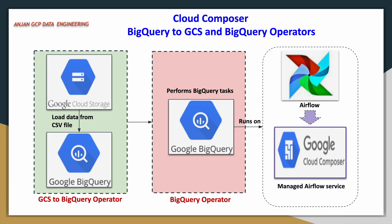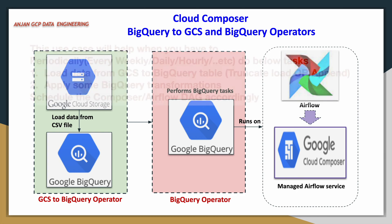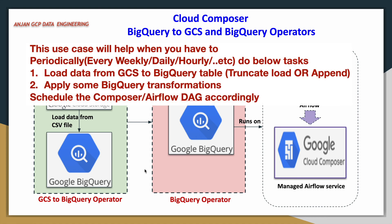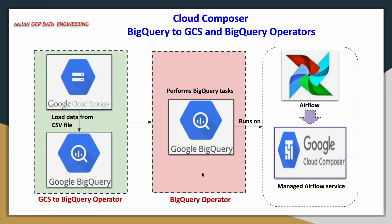This is a simple pipeline and these two operators are very important. Most of the time when you are working on a data warehouse with BigQuery, if you have to load data from Google Cloud Storage to BigQuery using Composer you will definitely use this operator. If you have to perform BigQuery-related tasks like executing a query, DML, or DDL, you have to use the BigQuery operator.